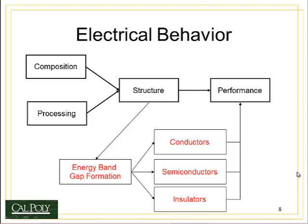Welcome to part two of topic five on electrical behavior and diffusion. In this part of the notes we'll talk about electrical behavior of conductors, semiconductors, and insulators, all of which are functions of electrical performance. In order to understand the differences between these three types of materials, we'll have to cover what's called energy band gap theory, which is a form of the structure of the materials.